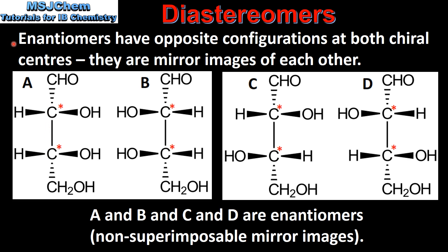Enantiomers have opposite configurations at both chiral centers — they are mirror images of each other. If we compare the enantiomers A and B, we can see that they have opposite configurations at both chiral centers, which means they are mirror images of each other. The same can be said for enantiomers C and D; they also have opposite configurations at both chiral centers, therefore they are mirror images of each other.